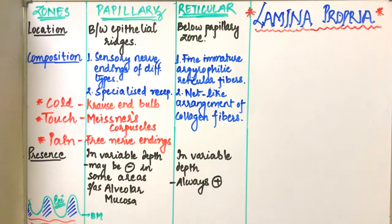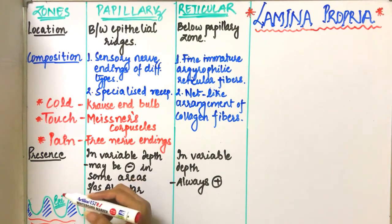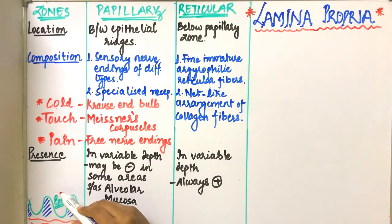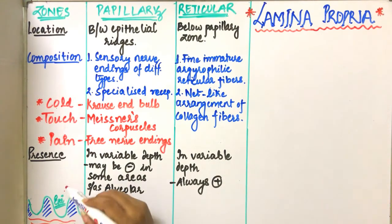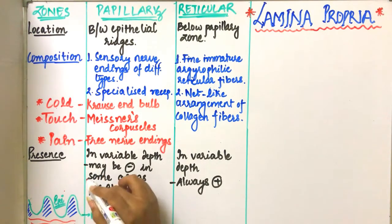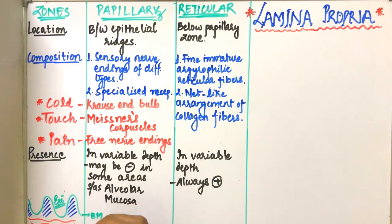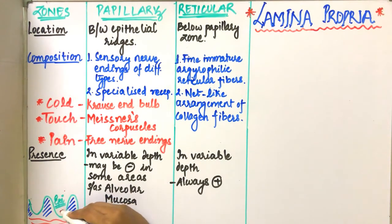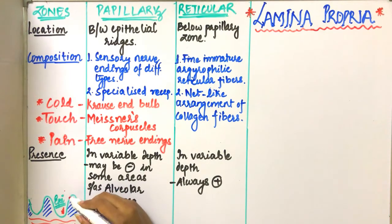We have already seen that the basement membrane separates the epithelium and the connective tissue. The epithelium and connective tissue are arranged in rete pegs. The portion of the connective tissue or lamina propria which is between the epithelial ridges is known as the papillary portion, and the portion below the papillary zone is known as the reticular portion.